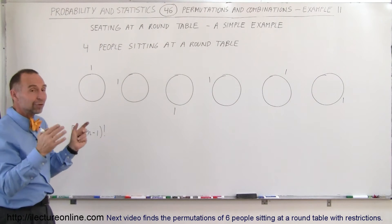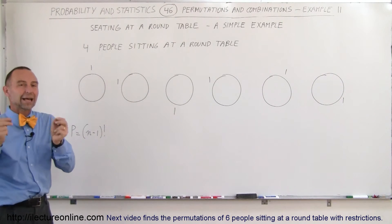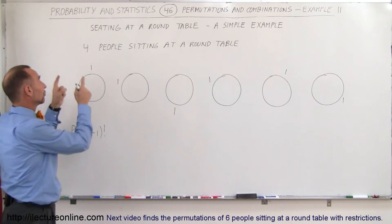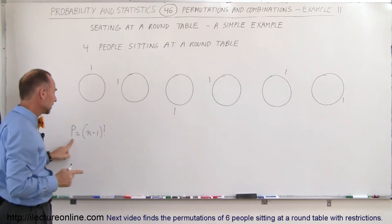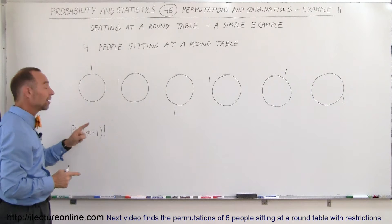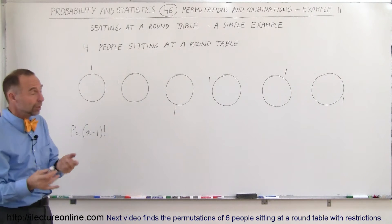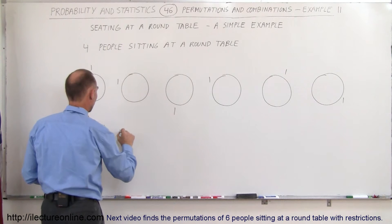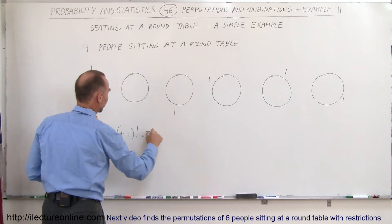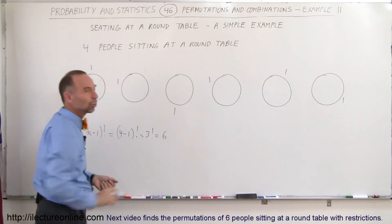Now where the other three people are placed does make a difference, because that's going to be relative to the first person. Therefore, the number of permutations is N minus 1 factorial. So in this case, with four people, that's equal to 4 minus 1 factorial, which is 3 factorial, which equals 6 different permutations.